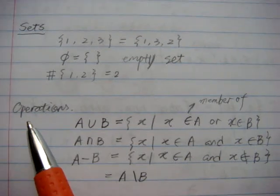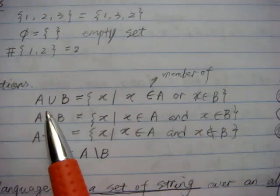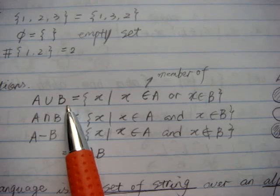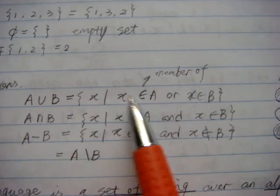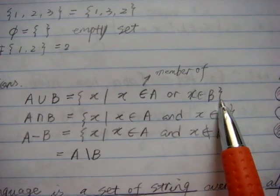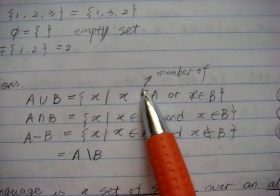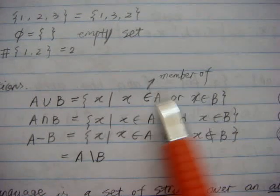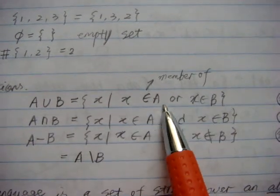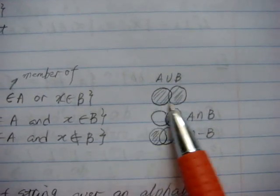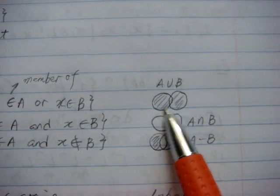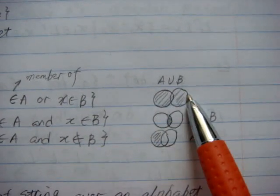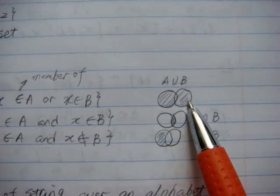There are a few operations we can use on sets. First, we're going to talk about union. A union B means that we pick an element that belongs to A or belongs to B. We use this symbol to represent 'member of' — so X is a member of set A. Using a diagram, A union B covers both of the sets.